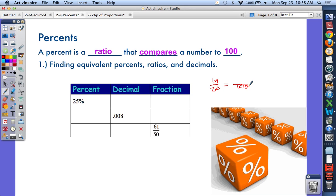For the first one, I want you to find equivalent ratios, percents, and decimals. You can work ahead of me or pause the video and do it first. To change a percent to a decimal, divide by 100, which is the same as moving the decimal point 2 to the left. So my decimal for the first one would be 0.25.